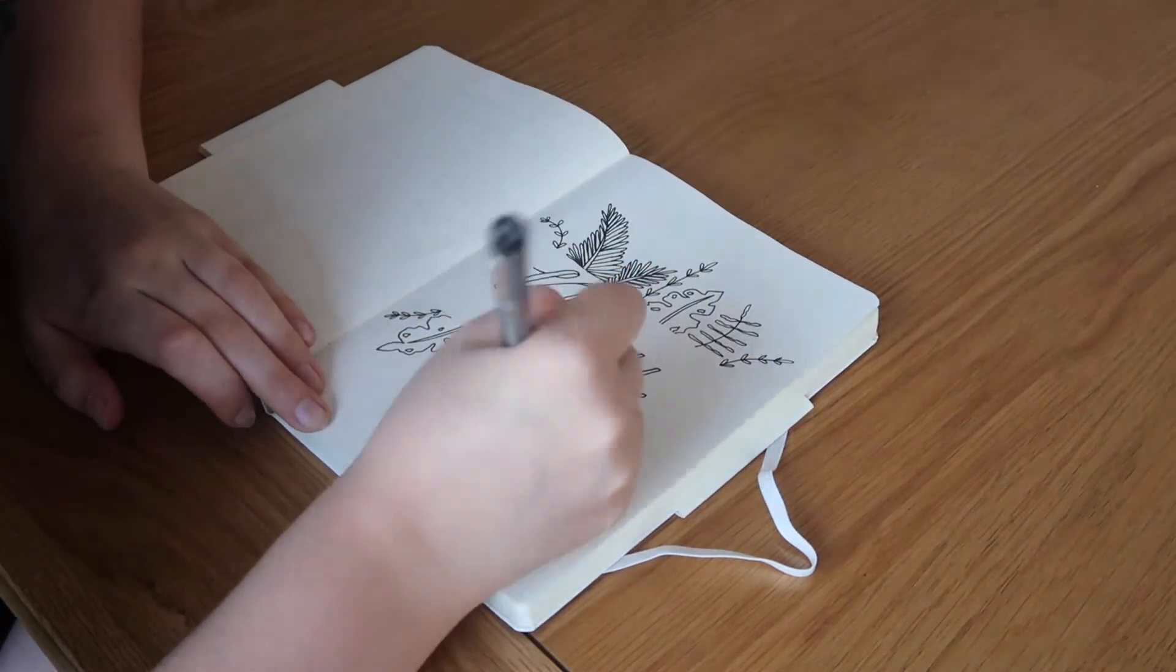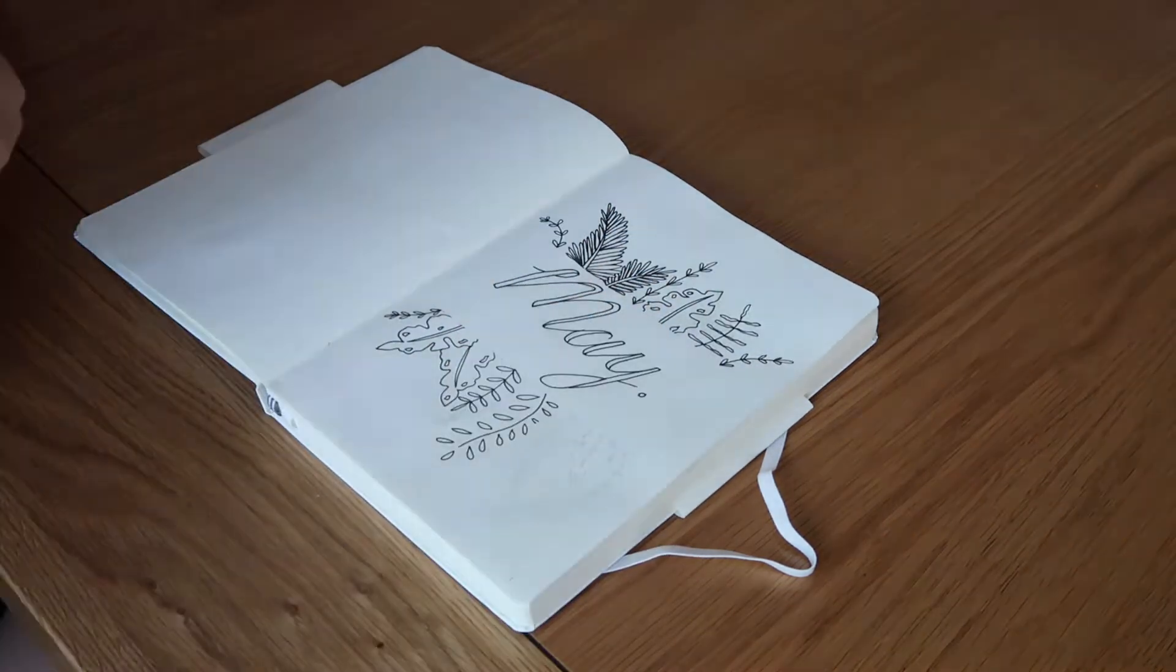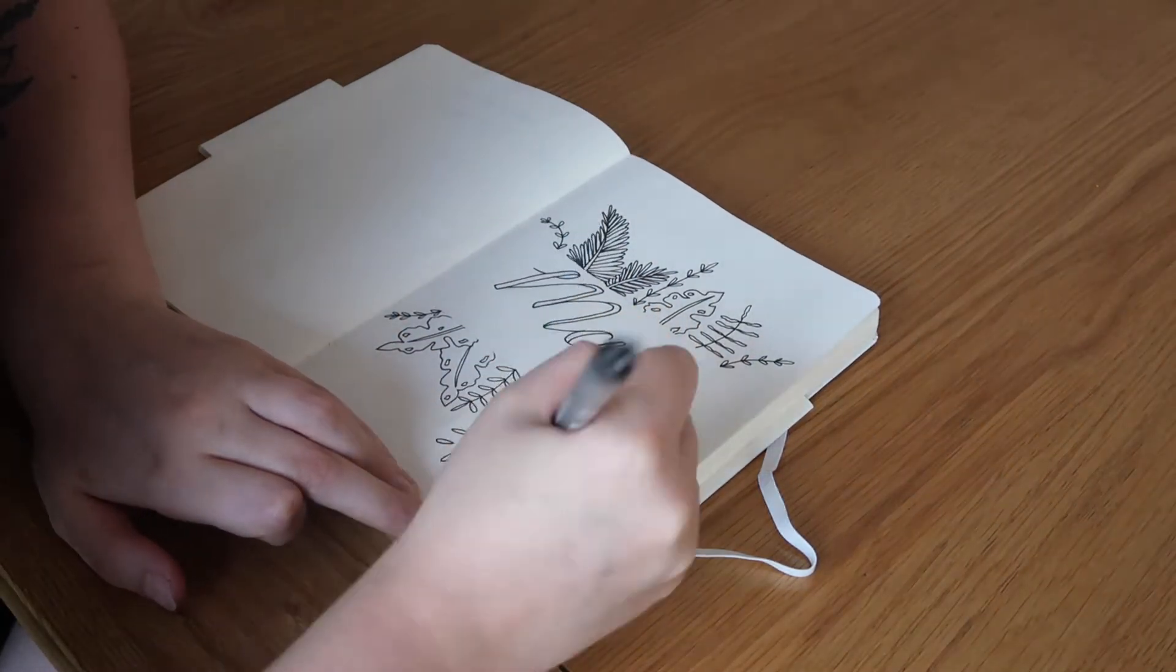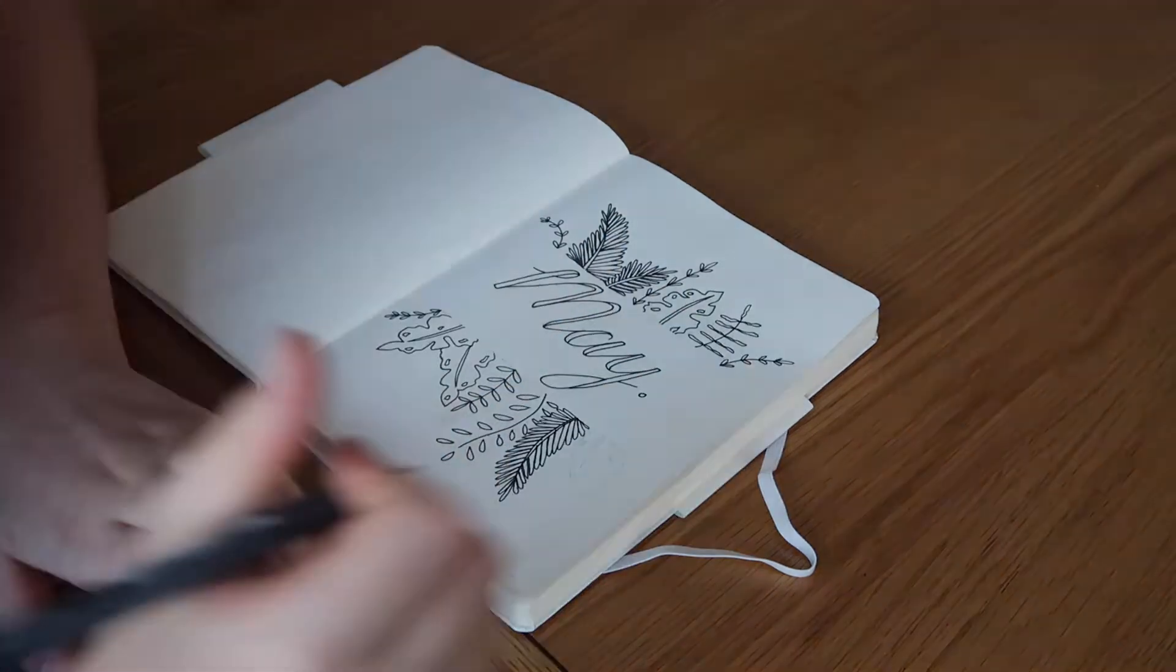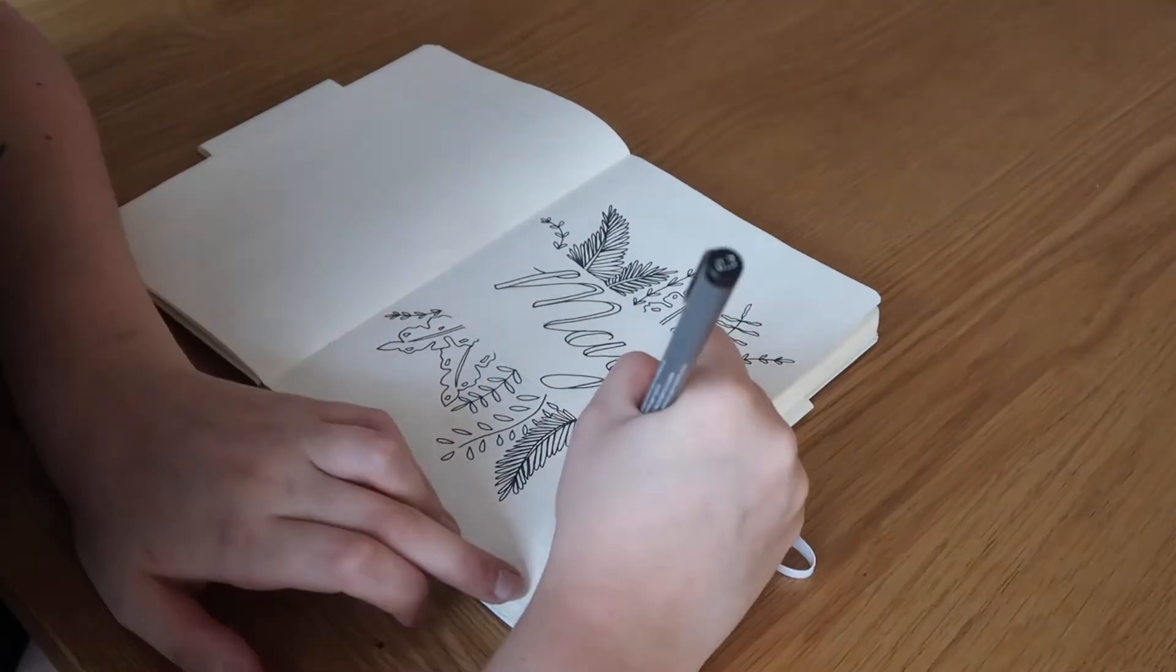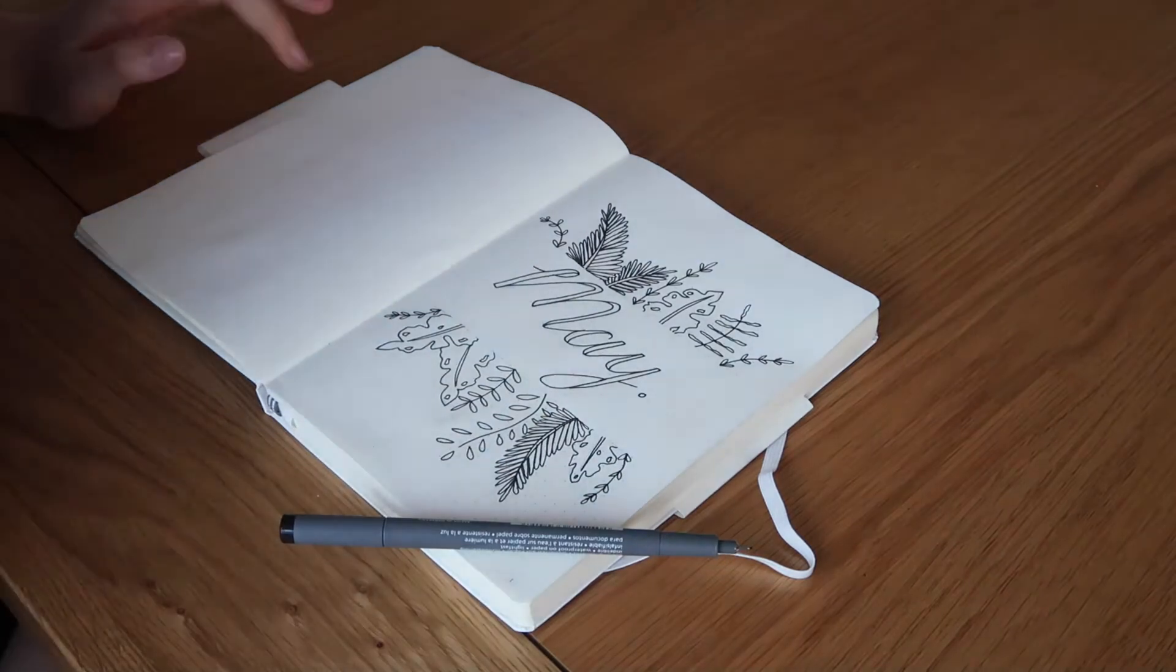This is the title page that I decided to do. I did May in the middle in this font and then I put the leaves sort of in a little border around it on the top and bottom and I really like it.